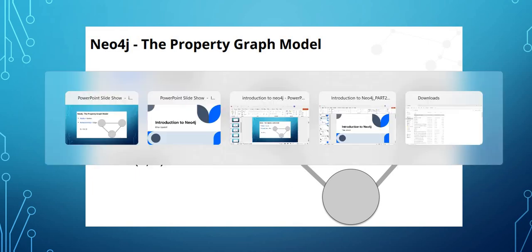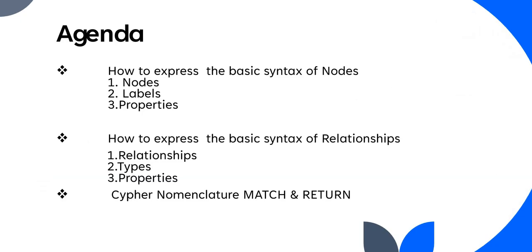Today we are going to see the syntax of how a node is defined, how a node is expressed, how labels are expressed, and how properties are expressed. We'll also cover the basic syntax of relationships — the direction, the type (name), and the properties associated with relationships. In the third part, we'll see the basic Cypher nomenclature of a match-and-return query.